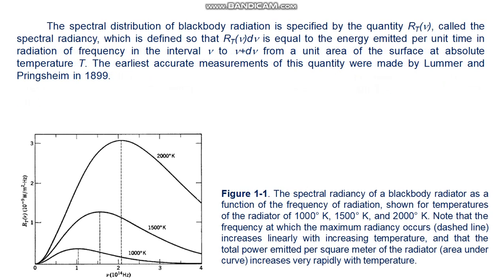The spectral distribution of black body radiation is specified by the quantity R sub T of nu, called the spectral radiancy, which is defined so that R sub T of nu multiplied by d nu is equal to the energy emitted, in the radiation of frequency in the interval from nu to nu plus d nu, from a unit area of the surface at absolute temperature T. The early accurate measurements of this quantity were made by Lummer and Pringsheim in 1899.